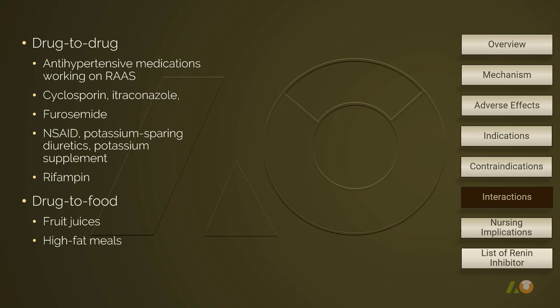Atorvastatin may increase the level of alaskirin; they can be used together with caution. Both cyclosporine and itraconazole greatly increase the blood level of alaskirin and may lead to undesired events, so it is contraindicated to use these medications with a renin inhibitor. Alaskirin may reduce the peak level of furosemide; therefore, using these two medications together reduces the effects of furosemide. NSAIDs, potassium-sparing diuretics, and potassium supplements increase the risk for hyperkalemia. Rifampin, fruit juice, and high-fat diet would decrease alaskirin's level and effect. When used together with rifampin, adjusting the dose of alaskirin may be needed.